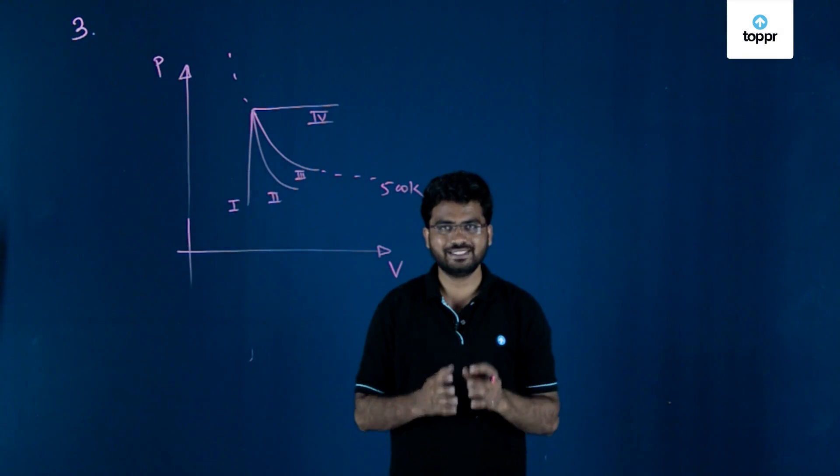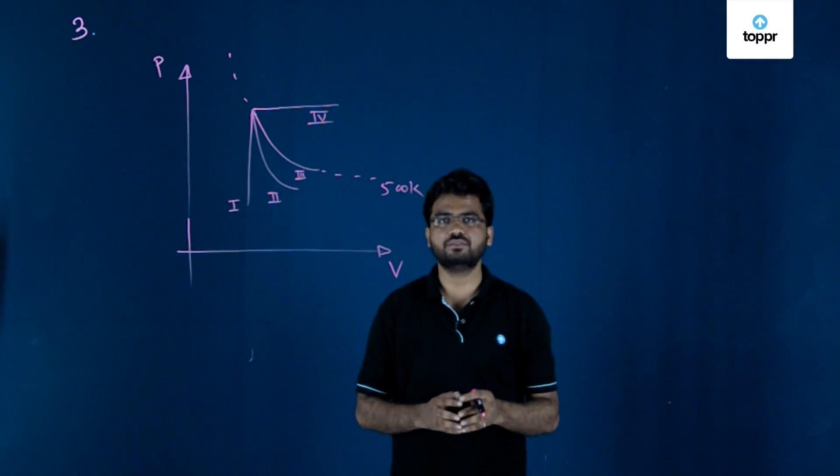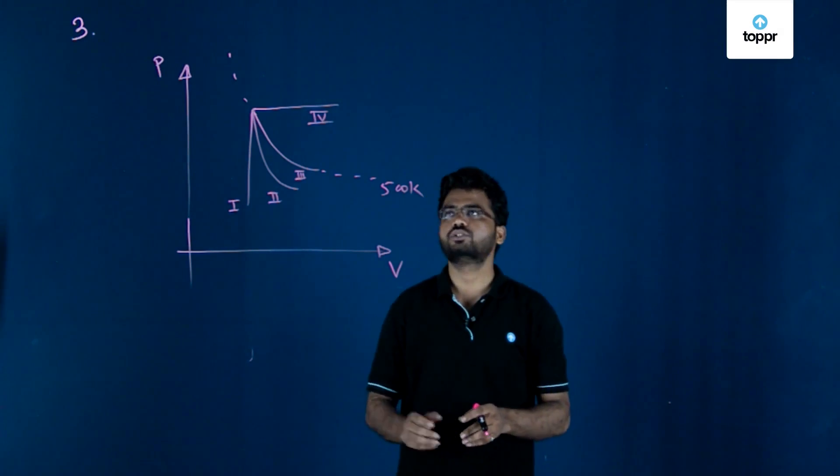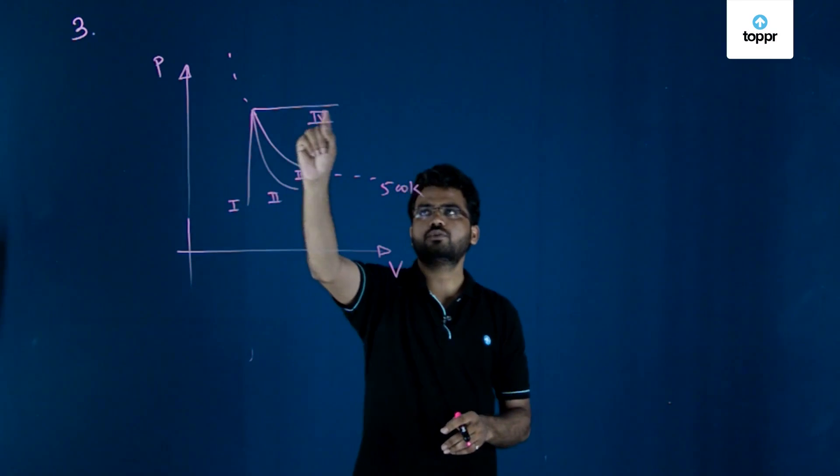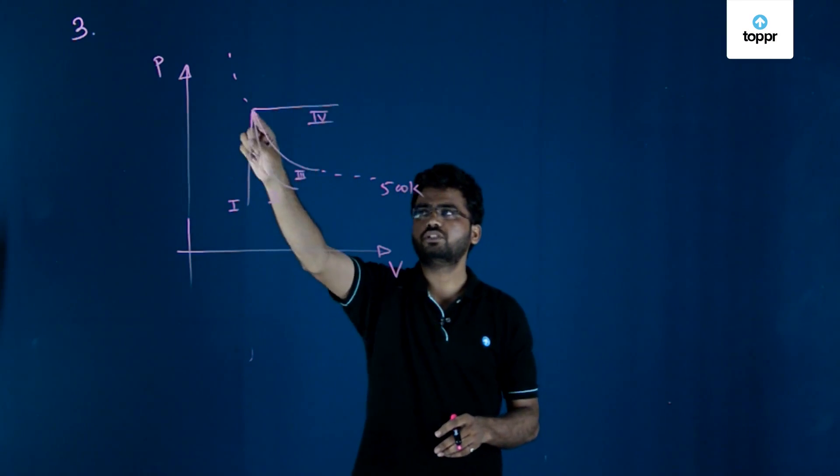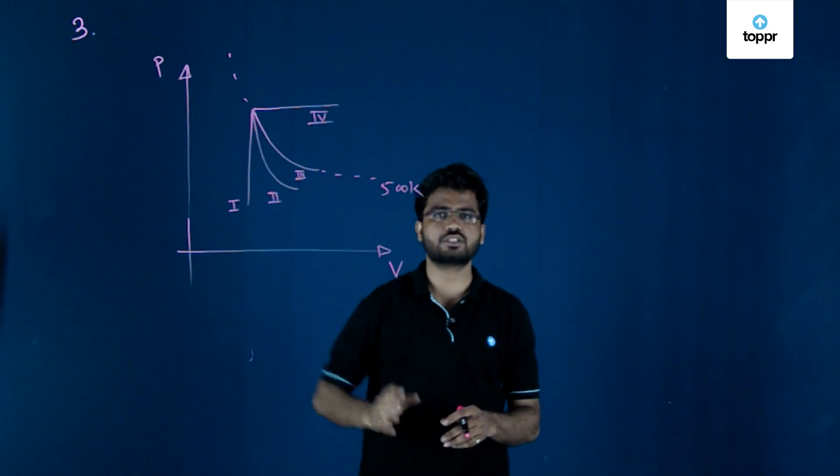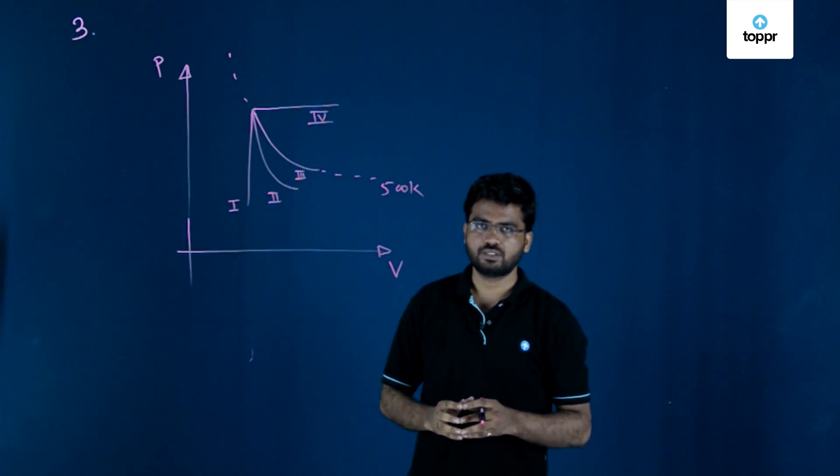In question number three, you have to find the process. This is process number four, this is process number three, this is process number two, and this is process number one.